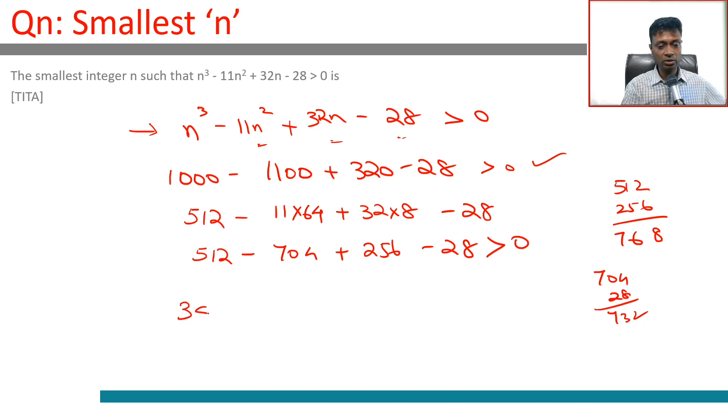Let's check it out anyway. So 343 - 11 × 49 + 32 × 7 - 28 > 0. This is true? 49 × 11 is 490 + 49 = 539.